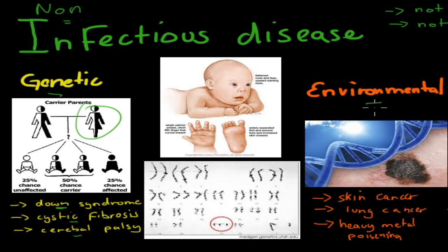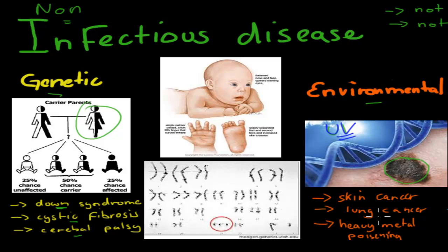Environmental factors mean that the environment somehow causes the disease. The example would be skin cancer, which is caused by UV light from the sun — it damages DNA and that causes cancer. Lung cancer can also be considered environmental; for example, if you're exposed to passive smoke, that smoke comes from the environment and can cause lung cancer. Heavy metal poisonings are also environmental diseases — if you're exposed to too many heavy metals from water or other sources, you can get disease.